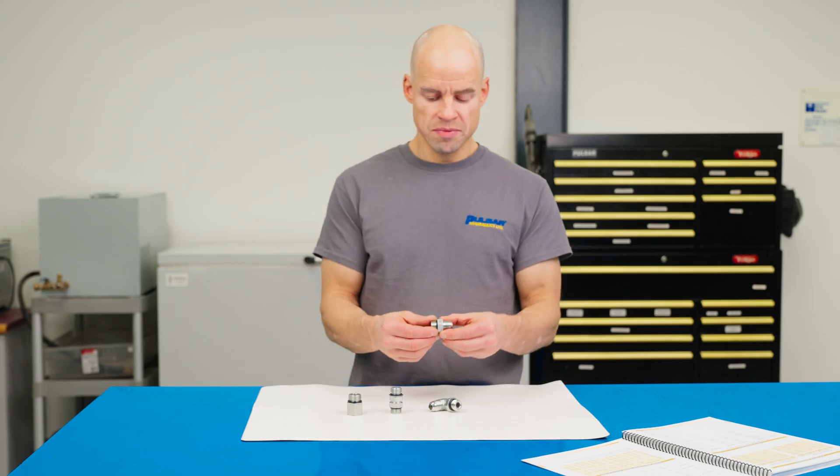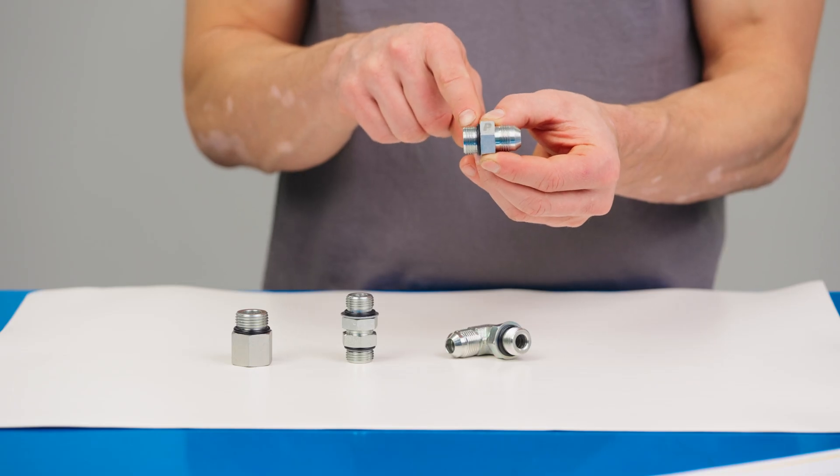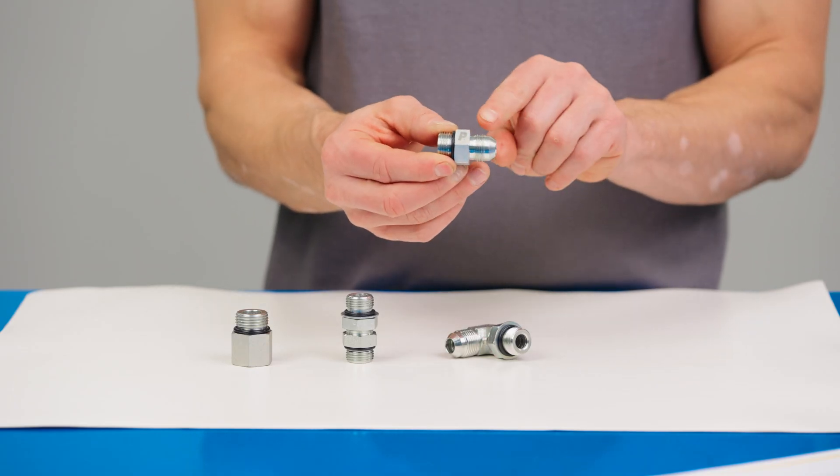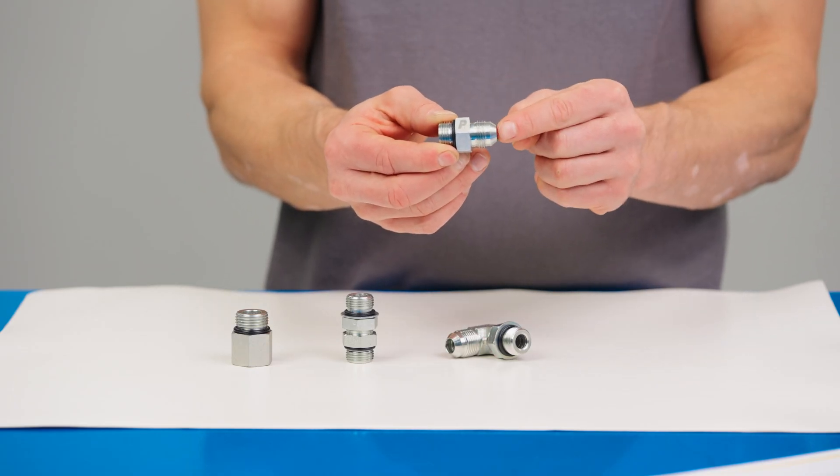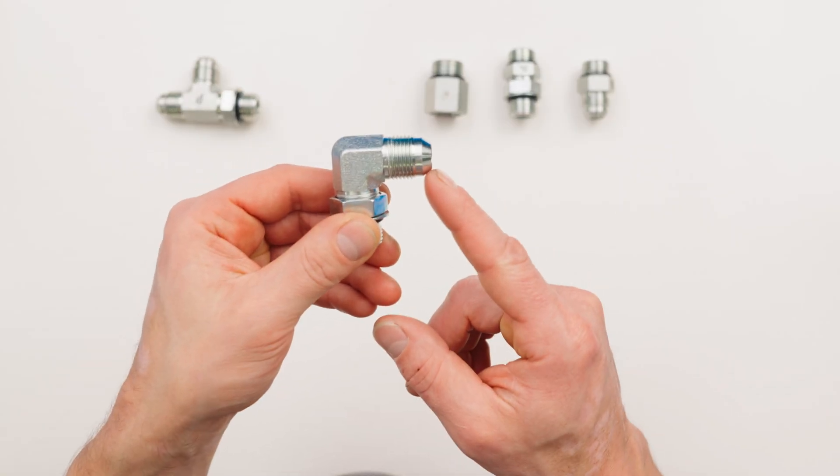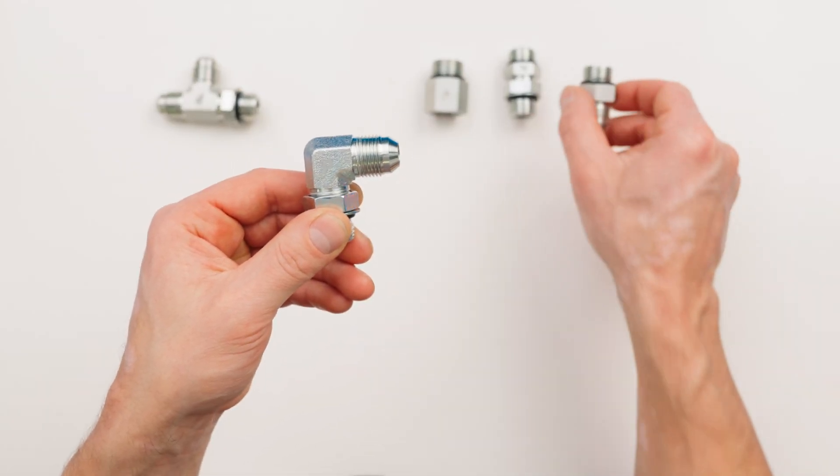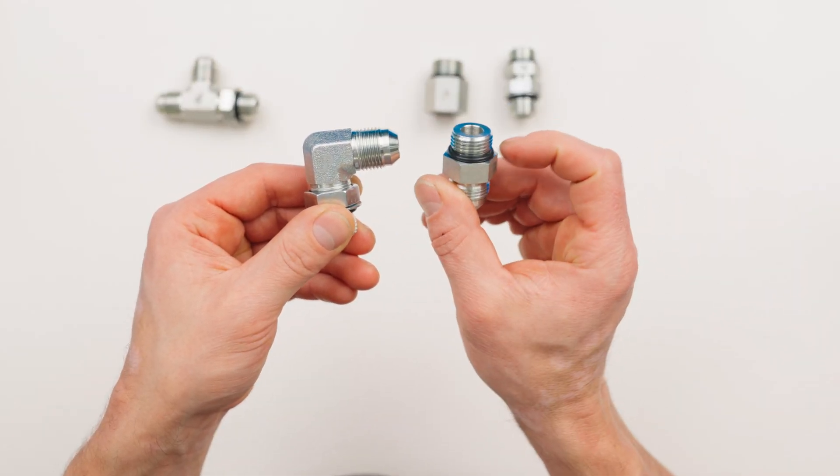O-Ring Boss or ORB fittings feature the same thread dimensions as JIC 37-degree flare fittings, but rather than sealing on a mated angle surface, O-Ring Boss fittings use an elastomeric seal.